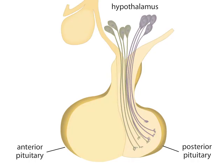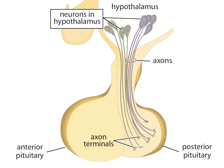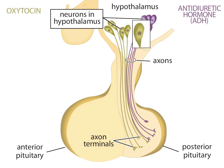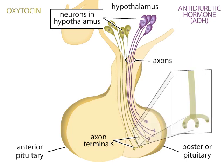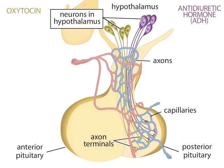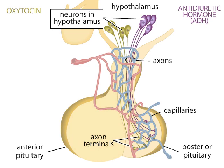As an extension of the brain, the posterior pituitary contains axons from neurons in the hypothalamus. These neurons produce two hormones released from the posterior pituitary: either antidiuretic hormone (ADH) or oxytocin. These hormones are made in the cell bodies and then transported to the axon terminals, which abut tiny capillaries in the posterior pituitary. If a neuron fires an action potential, it releases its hormones from the axon terminals, which quickly enter the capillaries and flow into the general circulation.